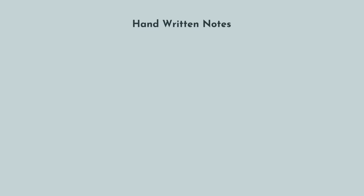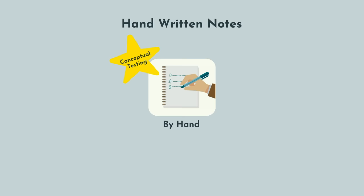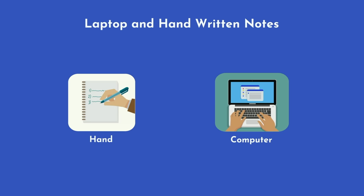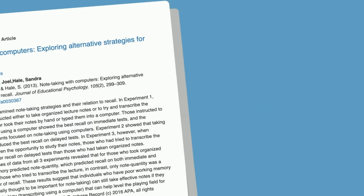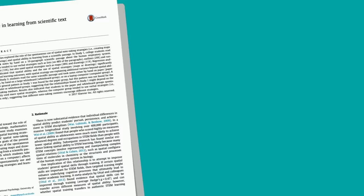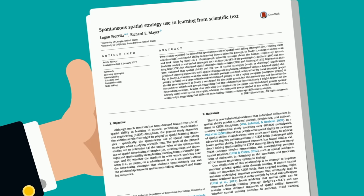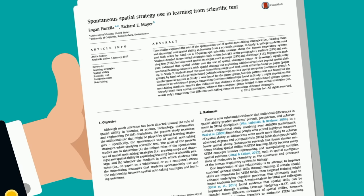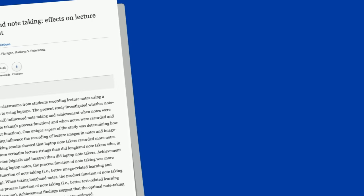Based on the Mueller and Oppenheimer paper, you may jump to the conclusion that taking notes by hand is superior. But the actual science is far more nuanced. Mueller and Oppenheimer found an advantage to handwritten notes with regards to conceptual testing, but no difference with regards to factual testing. Additionally, this only tested the process function of note-taking — meaning taking the notes — but not the product function, meaning reviewing the notes. When they did allow laptop and written note takers to review their notes, the handwritten notes performed better in both factual and conceptual testing.